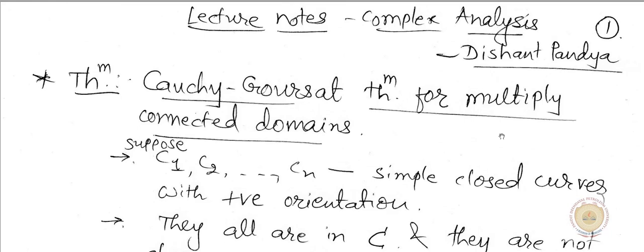We know that a simply connected domain is a domain in which there is no hole or gap. If you want to squeeze the full contour, you can squeeze that contour into a single point. If it is not possible, then we are dealing with multiply connected domains.